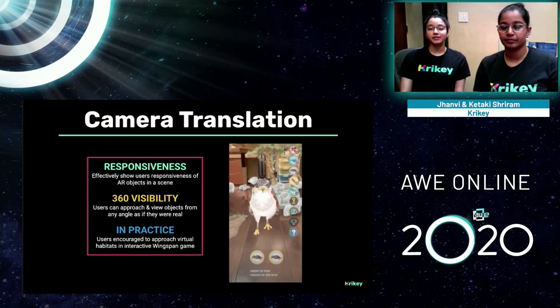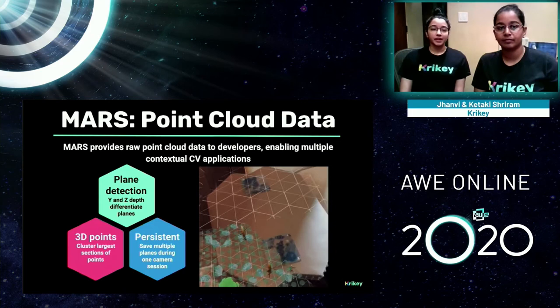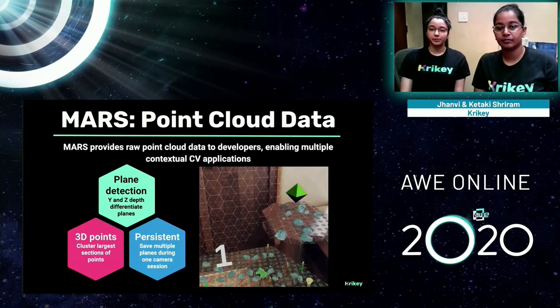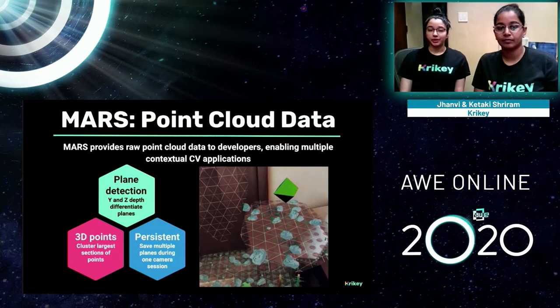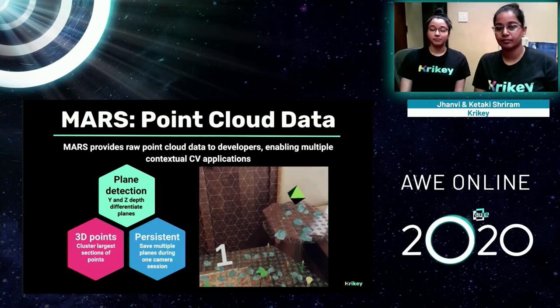MARS is unique because for the first time it allows developers to access raw point cloud data, enabling multiple types of contextual computer vision applications. We can access these by detecting and clustering 3D points — by finding the largest clusters, we can differentiate different planes in the same camera view. We're also able to save these multiple planes and point cloud data per session, meaning users can play for an infinite period of time with contextual features. In the GIF at right, we've detected multiple horizontal and vertical planes.